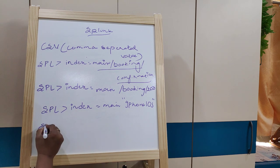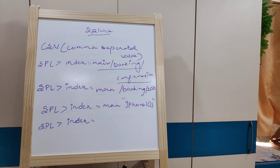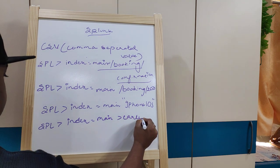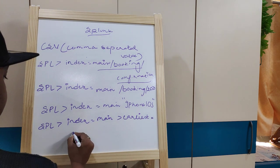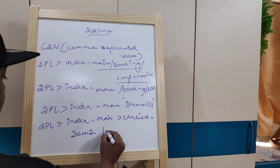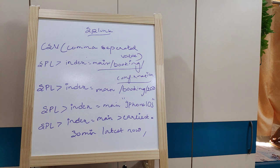The next command in Splunk uses a time-based filter: index=main with earliest=-30m. This retrieves events from the last 30 minutes. The 'earliest' parameter defines how far back to go, and 'latest' sets the upper bound — for example, 15 minutes latest and 30 minutes earliest to define a time window.